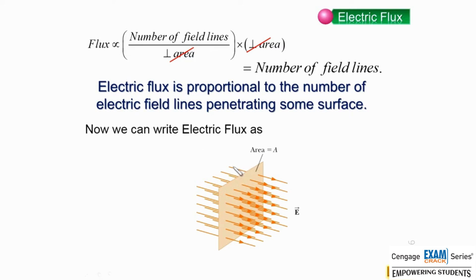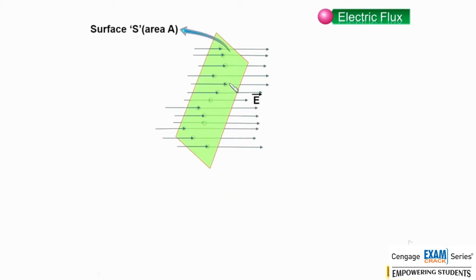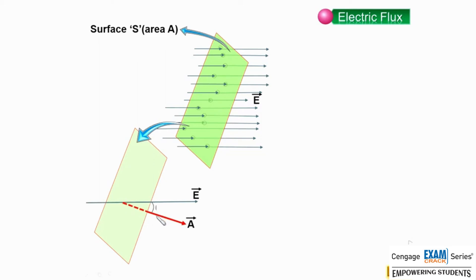Let us generalize this case. Let us place the same rectangular surface but not perpendicular to the electric field — instead inclined at a certain angle with the electric field lines. Let us call this surface area A. The electric field is horizontal, and the area vector is perpendicular to the surface. We define this angle as theta.